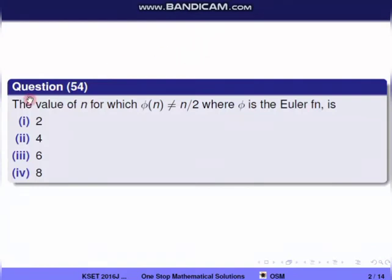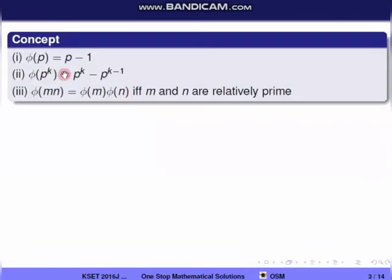Question 54: Find the value of n for which φ(n) is not equal to n/2, where φ is the Euler function. The concepts we use: for a prime p, φ(p) = p − 1; φ(p^k) = p^k − p^(k−1); and φ(mn) = φ(m)·φ(n) if gcd(m, n) = 1.